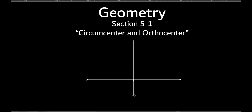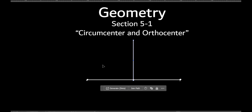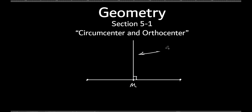We could go all the way through. So that's the midpoint, and we're going to go perpendicular to that point. If this is a right angle, this would be perpendicular. And this is the midpoint, so this right here would be the perpendicular bisector.